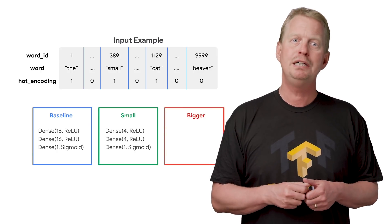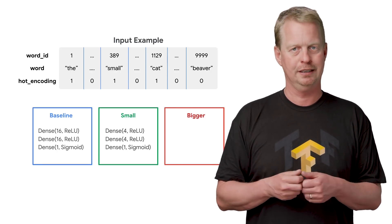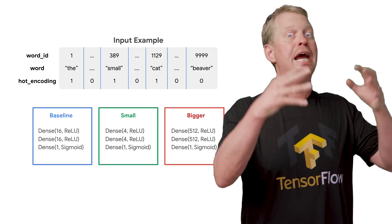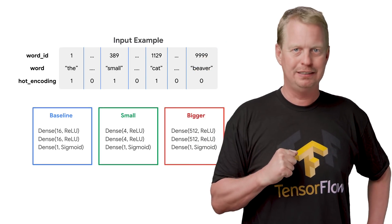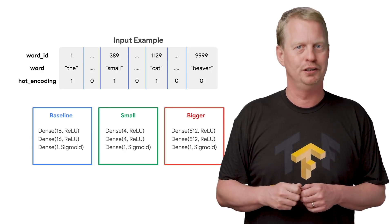Our small model will be just a fraction of our baseline model, with just 4 neurons instead of 16. And our bigger model will be very similar in structure, but have 512 neurons for the first and second layers.